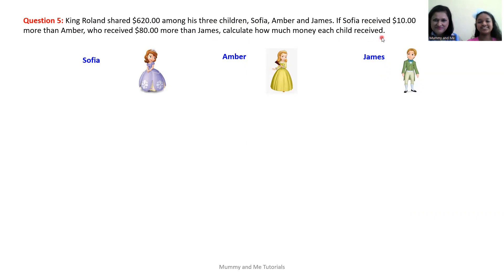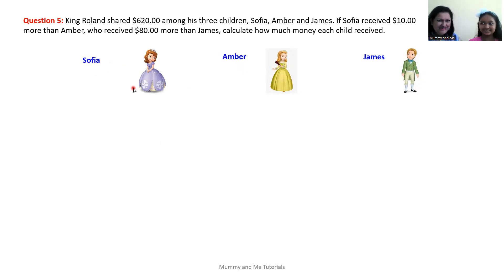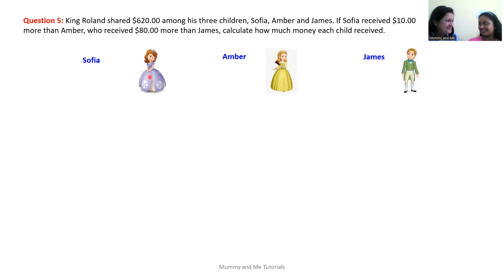Calculate how much money each child received. So what you're saying is that Amber received more money than James? Yes. And Sophia received more money than Amber? Yes. So why would King Roland give Sophia the greatest amount of money? Because Sophia was his favorite — since he gave her the amulet. Do parents have favorites? Are they allowed to have favorites? I'm your favorite. You're my only child. That doesn't count. That proves my point.